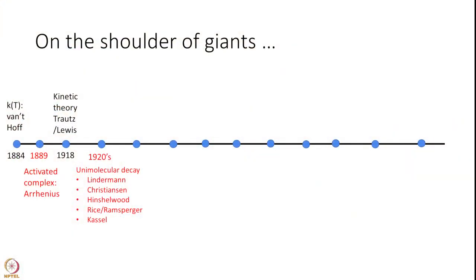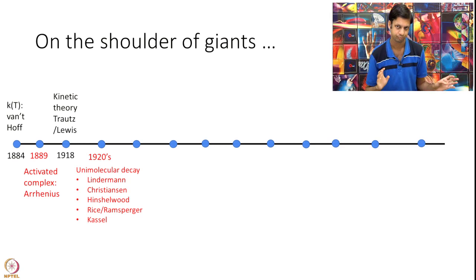1920s saw lot of discussion on some of the simplest reaction, which is unimolecular. Bimolecular is somewhat more complex. You have bonds making and forming. So, they said, let us start simple. We are beginning. And so, a lot of focus was spent on unimolecular reactions, which turned very insightful. That developed our intuition of chemical kinetics a lot.